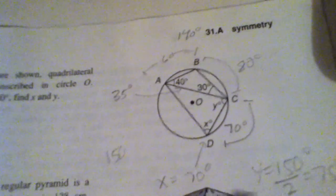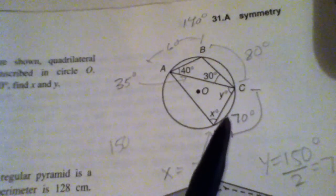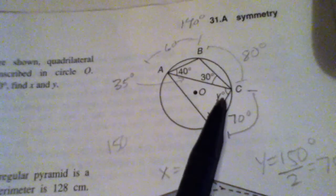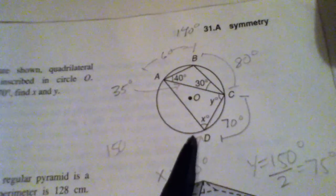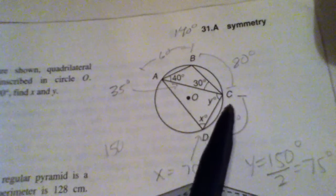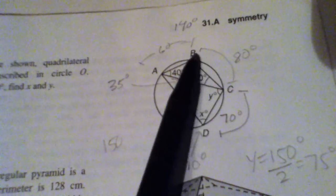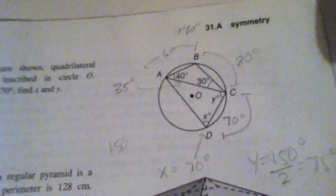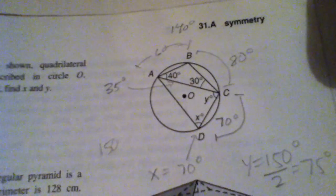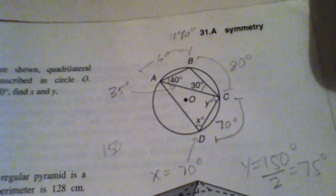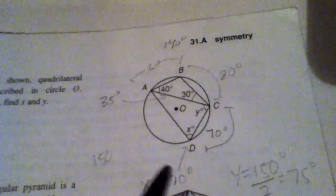So that gave me the idea of how I could get Y. I said, well, now I know if I go around the circle starting at D, I got 70 plus 80 plus 60. So I added that all together and subtracted it from 180.